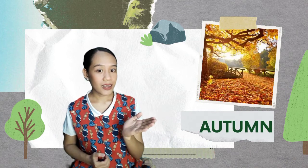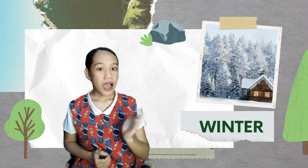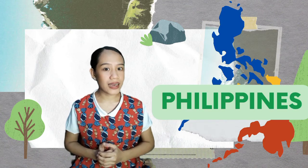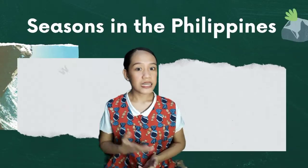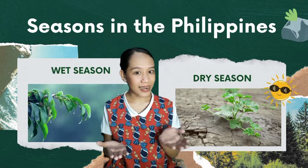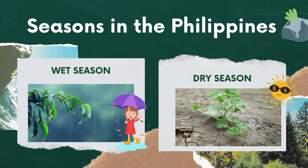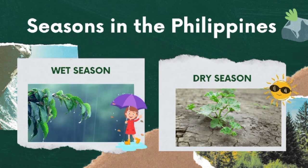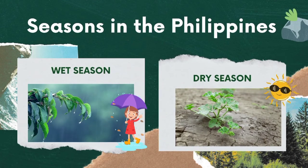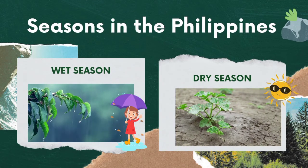Other countries have four different types of seasons: summer, spring, autumn, and winter. However, in the Philippines, we only have two different types of seasons — the wet season and the dry season. These seasons vary in different places in the country and are greatly affected by the geographical and physical conditions of the country.